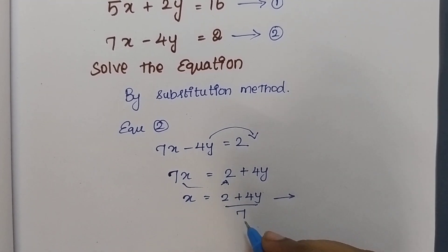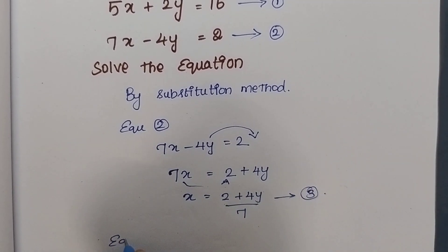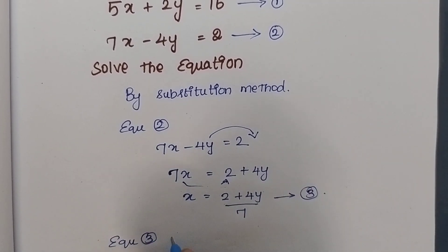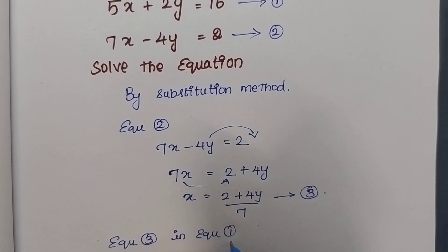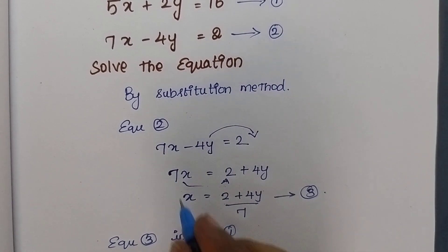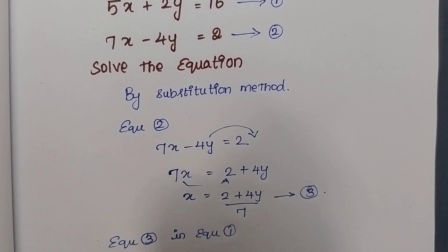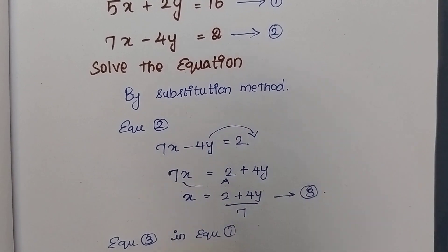I am going to substitute this x value. I am going to consider this as equation number 3. Then I am going to substitute equation number 3 in equation number 1. Why? Because we found equation 3 from the second equation — that is why I am going to substitute in equation number 1. So I am going to take equation number 1: 5x plus 2y is equal to 16. We know that x is equal to 2 plus 4y by 7.